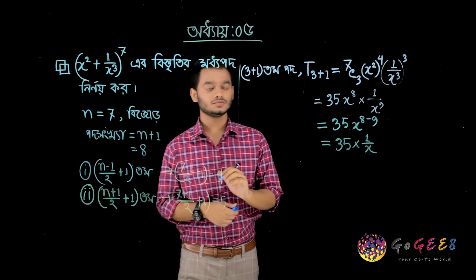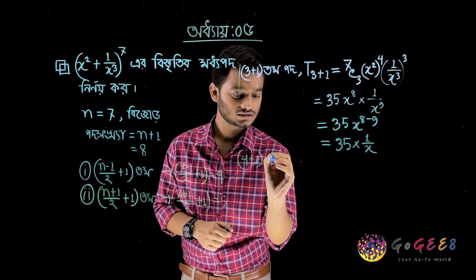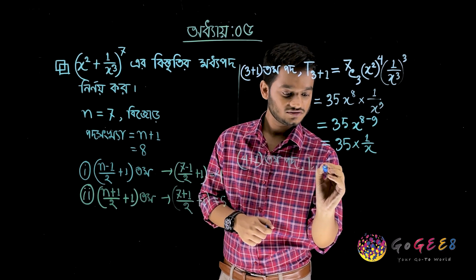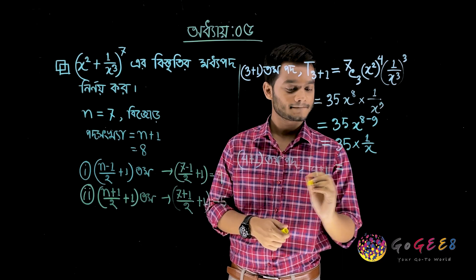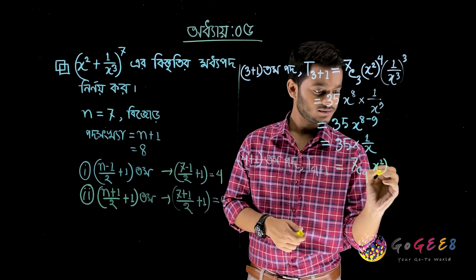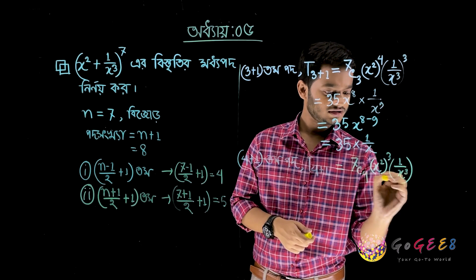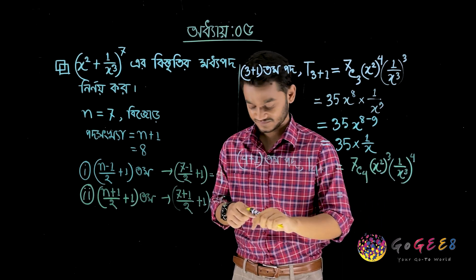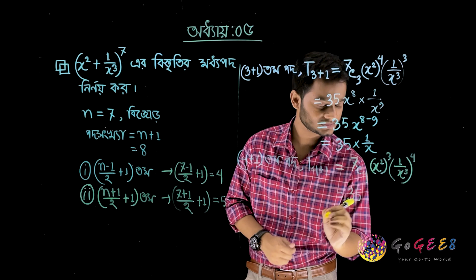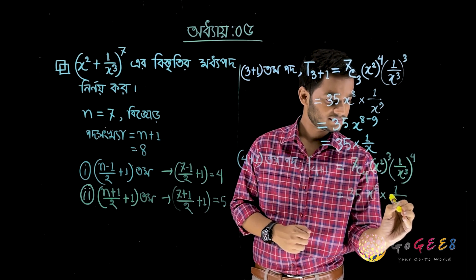35 into 1 by X. 4 plus 1, top 4. T of 4 plus 1, from 1. R1: 4, 7C4, X squared to the power of 7 minus 4, and 3, 1 by X cubed to the power of 4. 7C4: 35. X to the power 6 into 1 by X to the power 12.